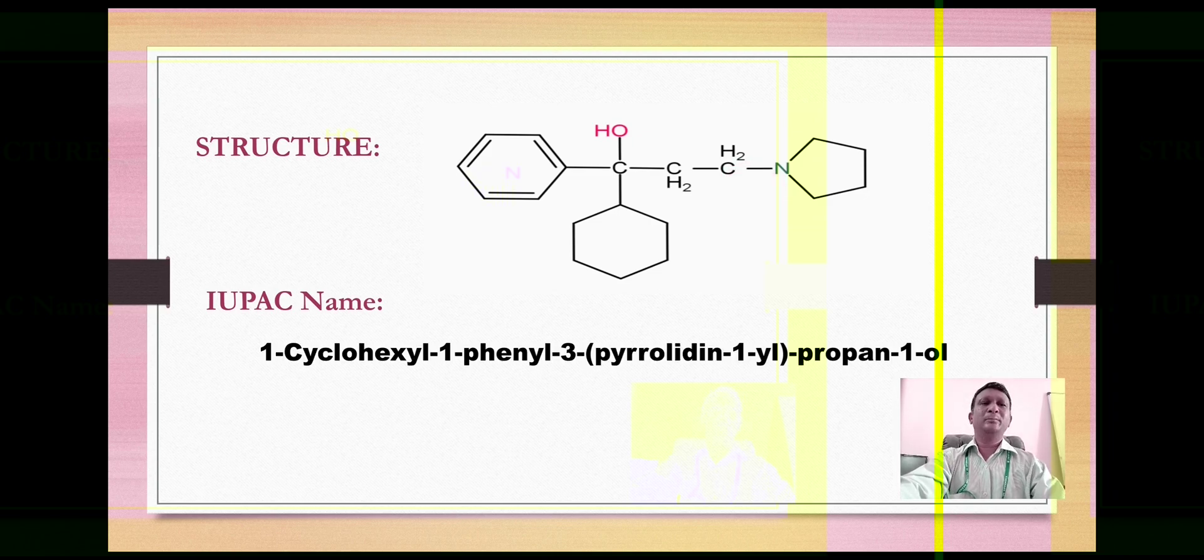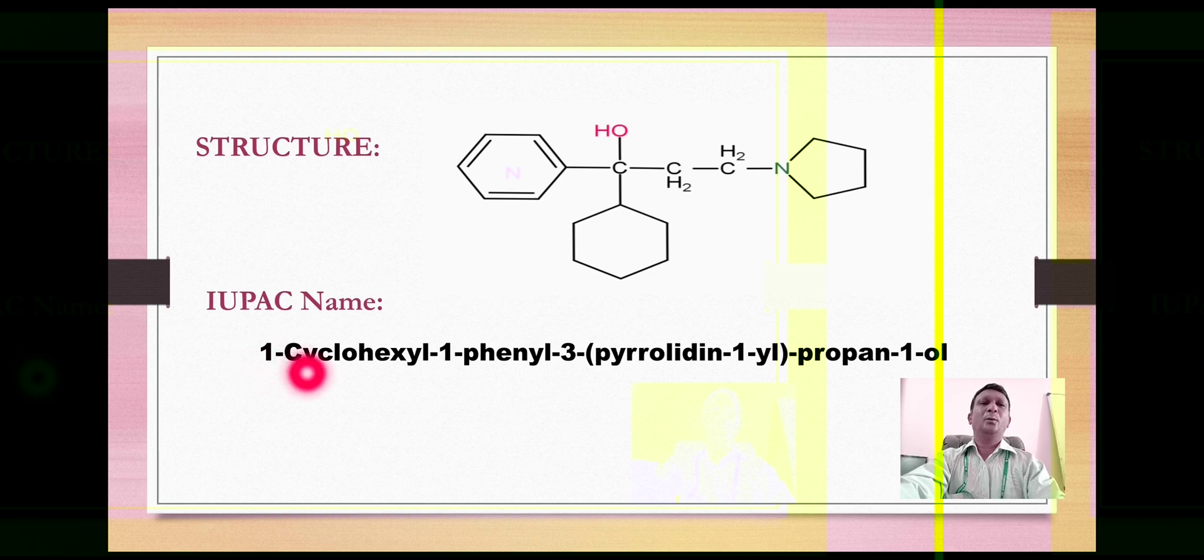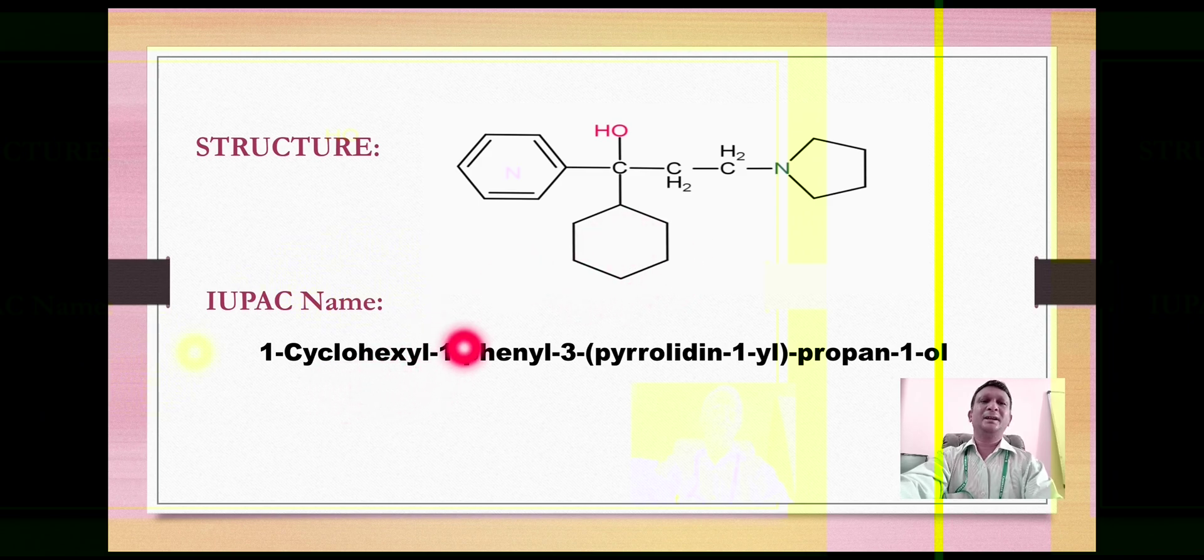So the IUPAC name of this compound will become 1-cyclohexyl-1-phenyl-3-pyrrolidin-1-yl propan-1-ol. From the IUPAC name itself, the name procyclidine is derived.